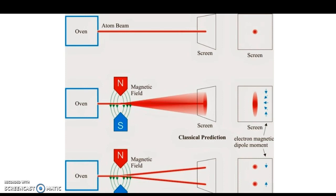If electrons were like ordinary magnets with random orientations, they would show a continuous distribution of paths. The photographic plate in the Stern-Gerlach experiment would have shown a continuous distribution of impact positions.